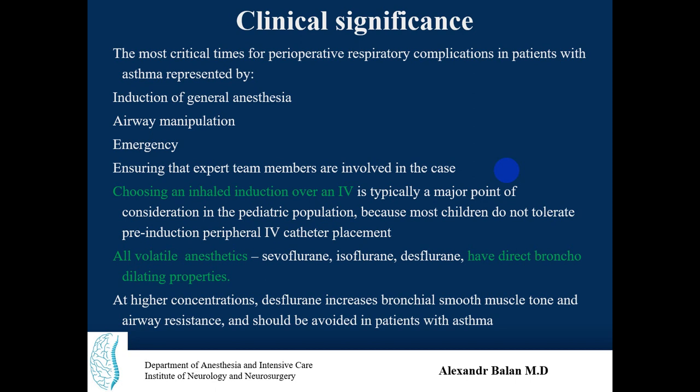Choosing an inhaled induction over IV drug induction is typically a major consideration in the pediatric population, as children do not tolerate manipulations well. Induction through inhalational anesthetics followed by IV catheter placement is preferred. All volatile anesthetics — sevoflurane, isoflurane, and desflurane — have direct bronchodilating properties; however, at higher concentrations, desflurane increases bronchial smooth muscle tone and airway resistance and should be avoided in asthma patients.